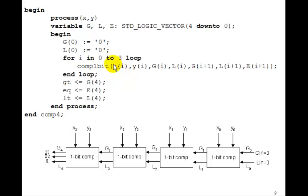So how does the algorithm work? Well, you remember, we set g0 and l0 to 0. And then we just go through a for loop four times, for i equals 0 to 3 loop. First time through, i is equal to 0. So the parameters of comp1bit are just going to be x0, y0, g0, and l0. And the outputs are g1, l1, and e1, which we don't connect anything. But we just keep going around the loop.